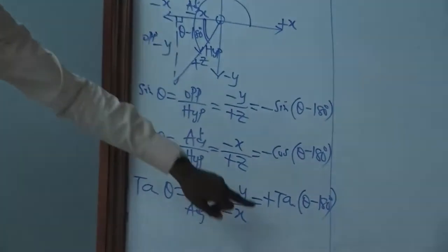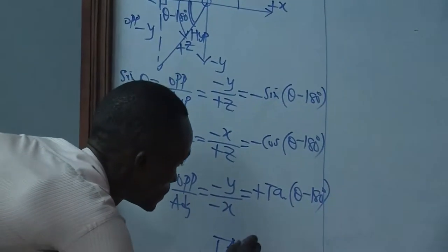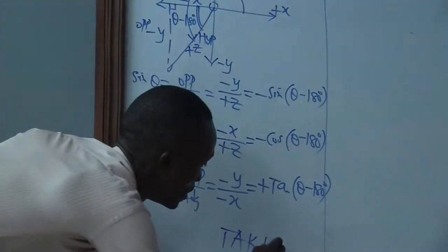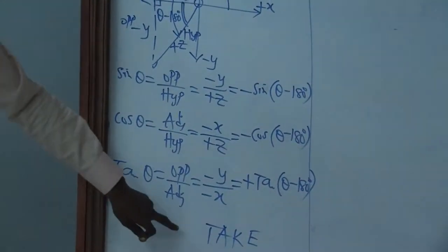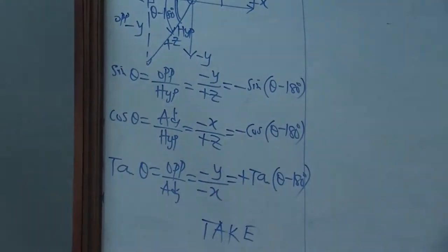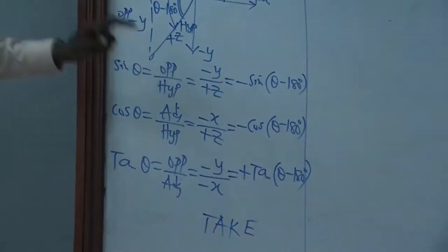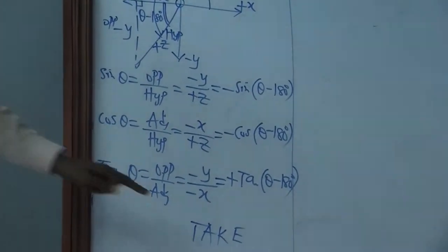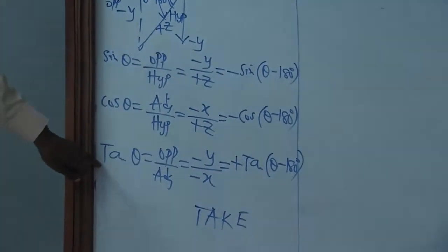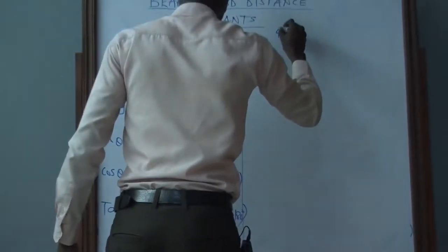In the third quadrant only tan is positive, so I represent this one with 'Take.' For the first quadrant I used 'All,' for the second quadrant 'Students,' and now for the third quadrant 'Take.' That takes us to the last quadrant — the fourth quadrant.